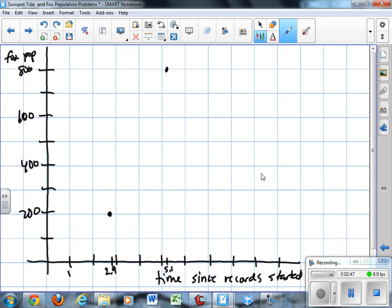Now, we talked about before that if you knew from a low point to a high point, you know half of a cycle. So from here to here is a half cycle. And that is 2.2 years if you do 5.1 minus 2.9.